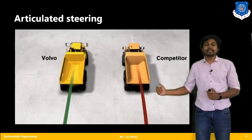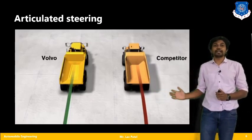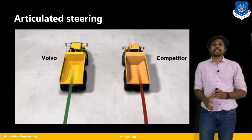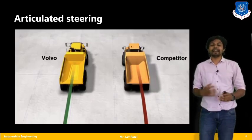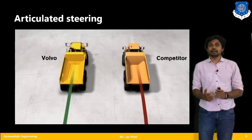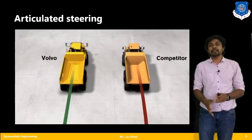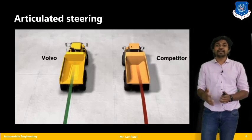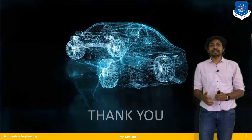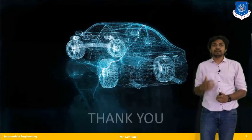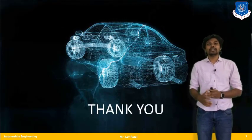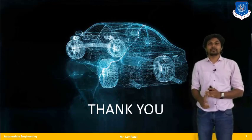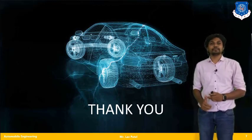A comparison is shown between the Volvo truck and other trucks. With the articulated steering system, you get a very steady, controllable drive, while other trucks have bulky steering that is difficult to turn at certain angles. This concludes our topics on steering systems. Thank you.